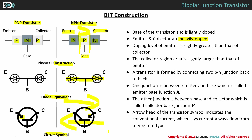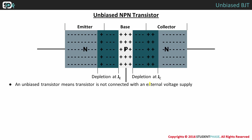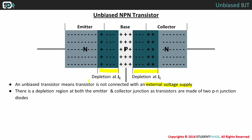Now let's know more about unbiased BJTs, which means connected with no external voltage supplies, as shown in the diagram. They have a depletion region at both the emitter and collector junctions, as transistors are made of two PN junction diodes.